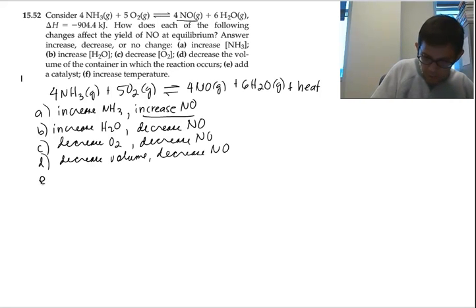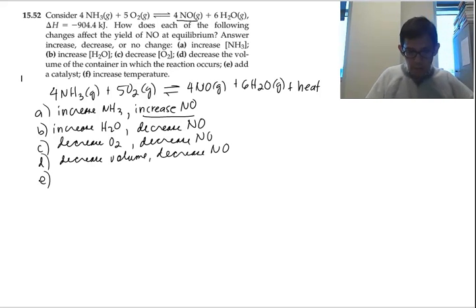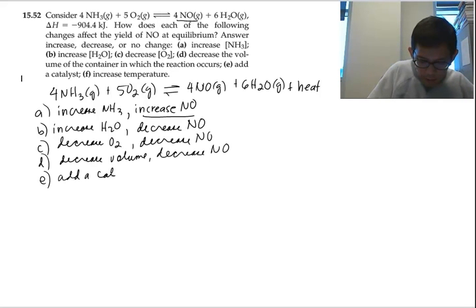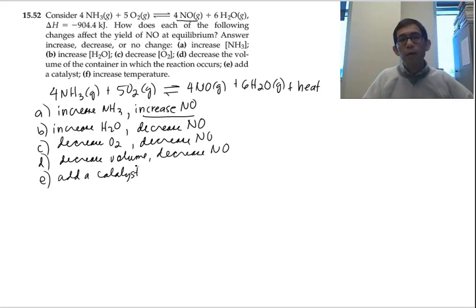Part E. If you add a catalyst, the only thing that happens is the reaction goes faster either way. So no change in the yield of NO.